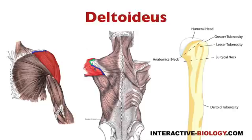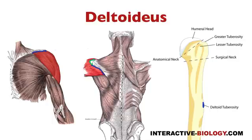So that would be the origin. Now in terms of the insertion, we already spoke about that in one of the earlier videos, but right here on the humerus we have the deltoid tuberosity — a roughened patch right here. And that is where it inserts, coming from the origin point down and inserting on this deltoid tuberosity.